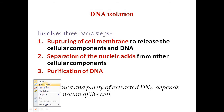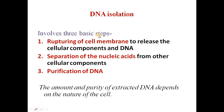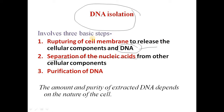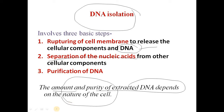DNA isolation involves three basic steps. In the first step, there is a need to rupture the cell membrane, and only because of rupturing of this cell membrane is it possible to isolate and purify the DNA. Afterwards, there is a need to separate the nucleic acid, because in bacterial cells, along with DNA, there are proteins as well as RNA. So for isolation and purification, we have to remove other cell organelles or debris from the solution. The amount as well as the purity of extracted DNA depends upon the nature of the cell we are using and how it responds to these techniques.